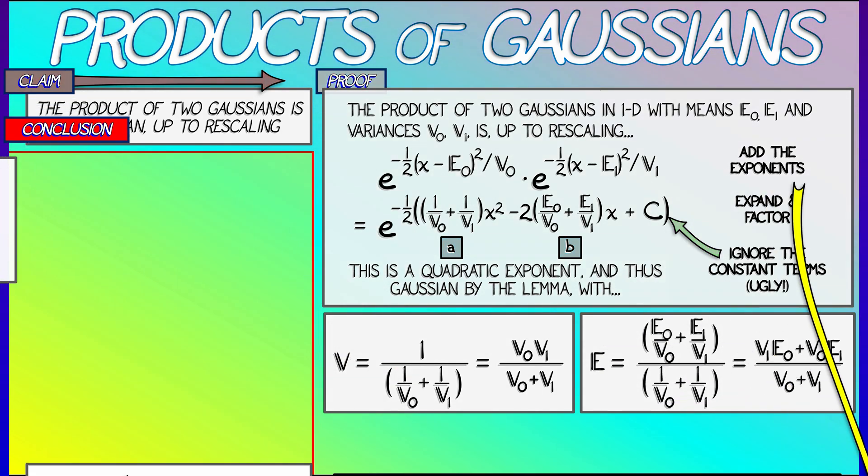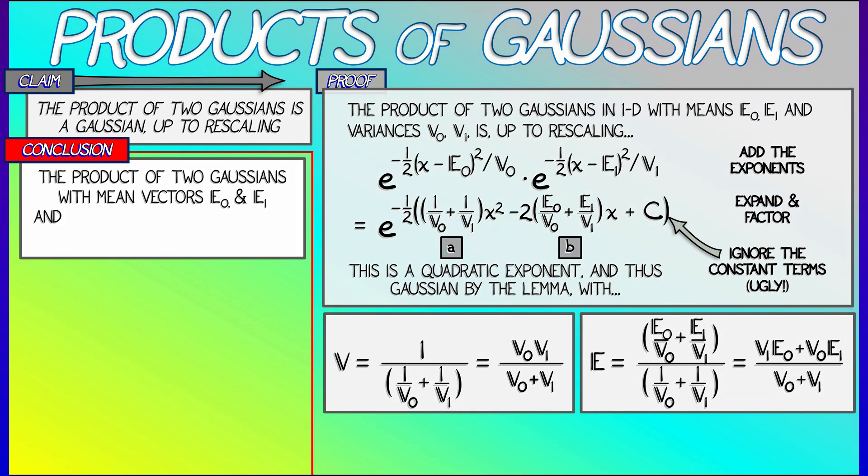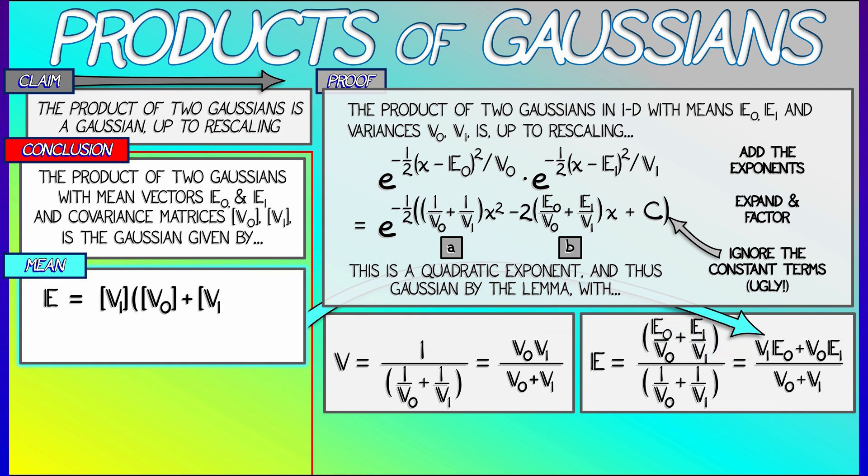And what we get in the end when we take a product of two Gaussians with mean vectors e0 and e1 and covariance matrices v0 and v1 respectively is, again, a Gaussian whose mean is, I take the matrix v0 plus v1 and I invert it. Pre-multiply by v1, post-multiply by e0, add to that v0 plus v1 inverse, pre-multiply by v0, post-multiply by e1.